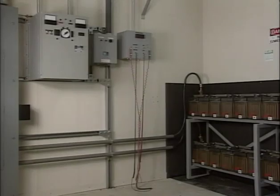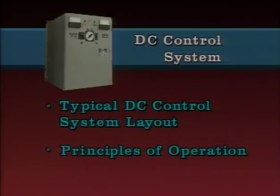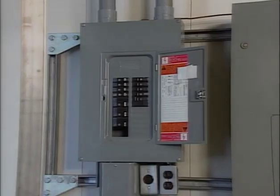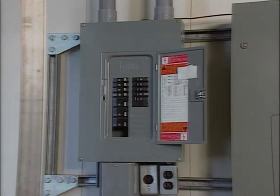In order to clearly understand the role of a charger in a DC control system, it's necessary to know what a typical DC control system layout looks like and how the system works. This part of the program will describe a typical DC control system, covering the layout and the principles of how the control system works. The first part of a DC control system is located at the AC supply panel, which is the source of alternating current to the battery charger. A breaker in the AC supply panel controls the supply of AC power to the charger.